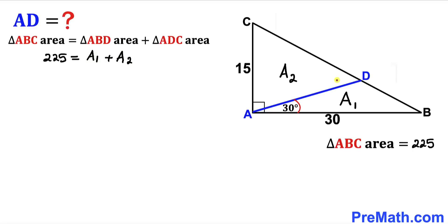Since we are interested in finding the length of side AD, let me represent this side as x units. We know that angle ABC is 90 degrees and angle DAB is 30 degrees, so angle DAC is going to be 90 minus 30 which gives us 60 degrees.